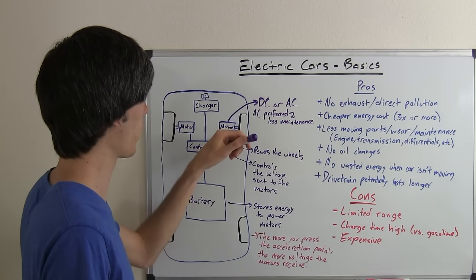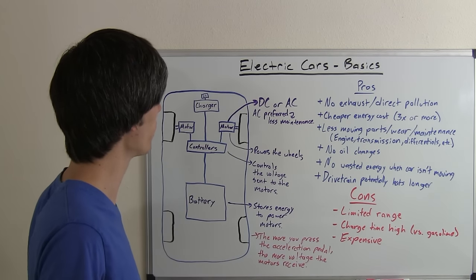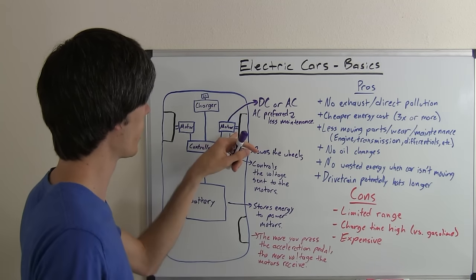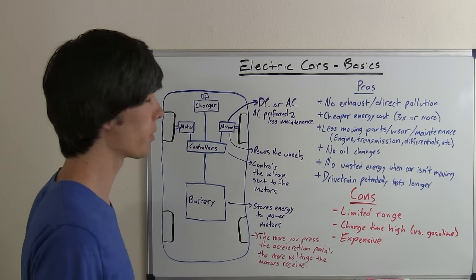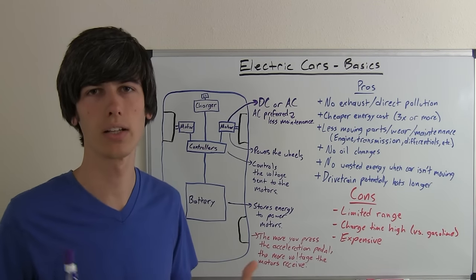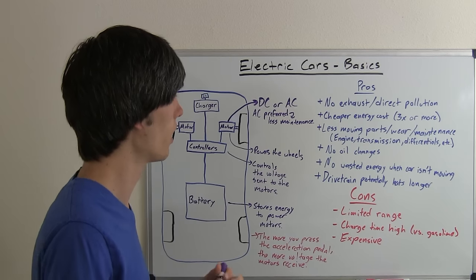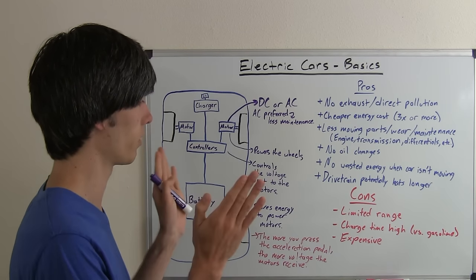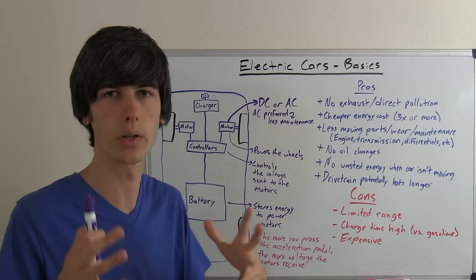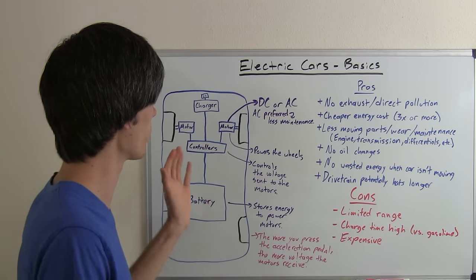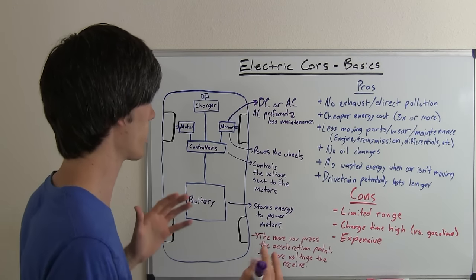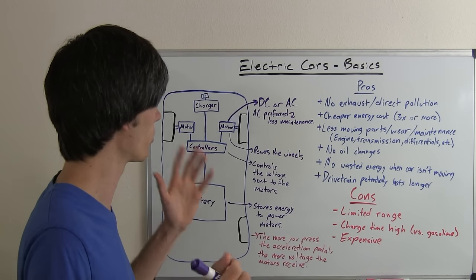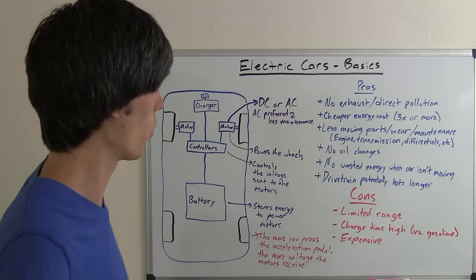You could have a gear reduction or some sort of gearbox to change the gearing between the motor and the wheel, but typically you won't need a transmission like you have with an ICE engine because you don't have a smaller power band where you can only produce useful torque. Electric motors can go up to higher RPMs and you can pretty much do the entire acceleration from zero to whatever the top speed is with one gear.